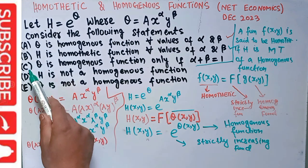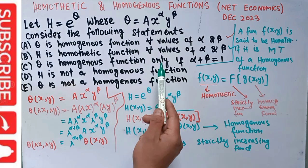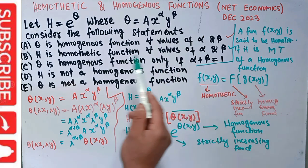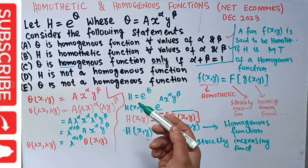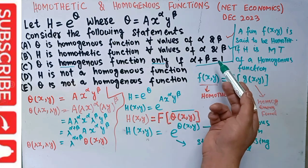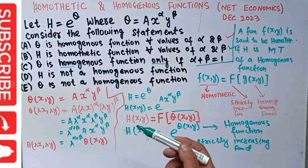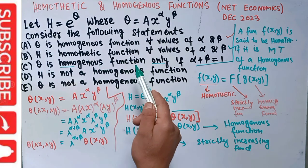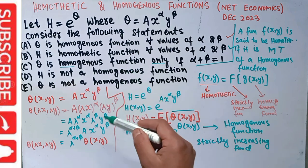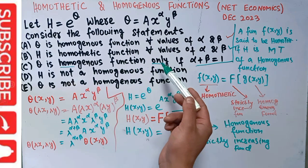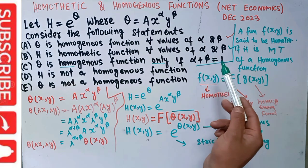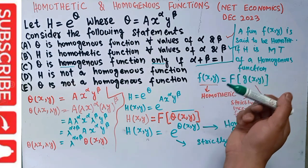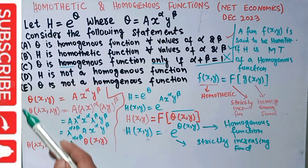The third option says q is a homogeneous function only if α + β = 1. This is not correct — q is homogeneous for all values of α and β. This would be a specific case, but in general q is homogeneous for all α and β, so it is not necessary that α + β = 1. This option is incorrect.